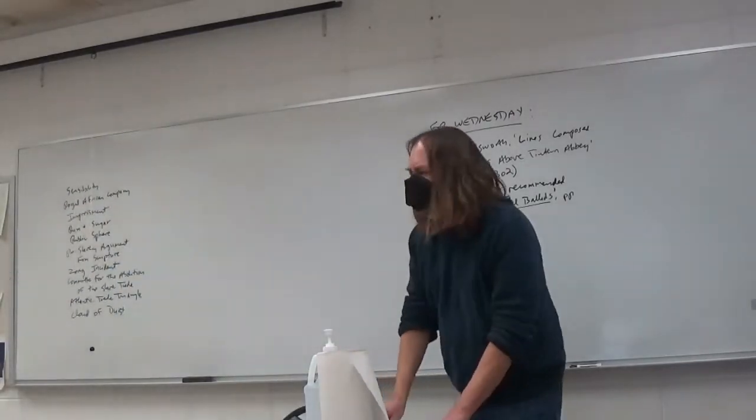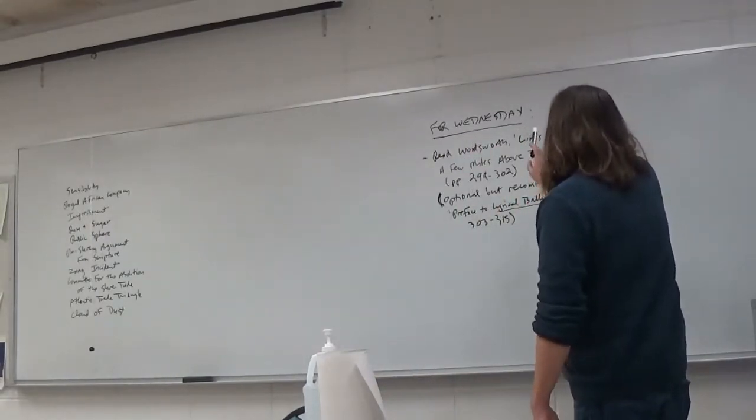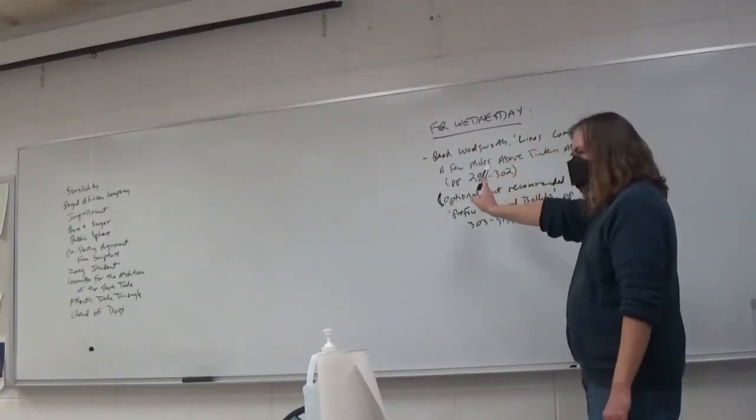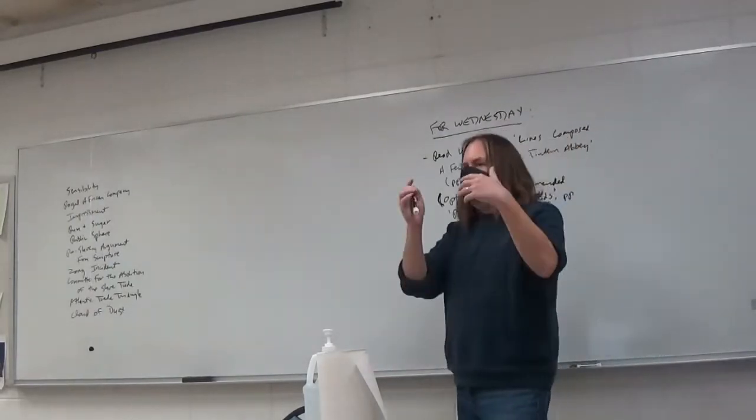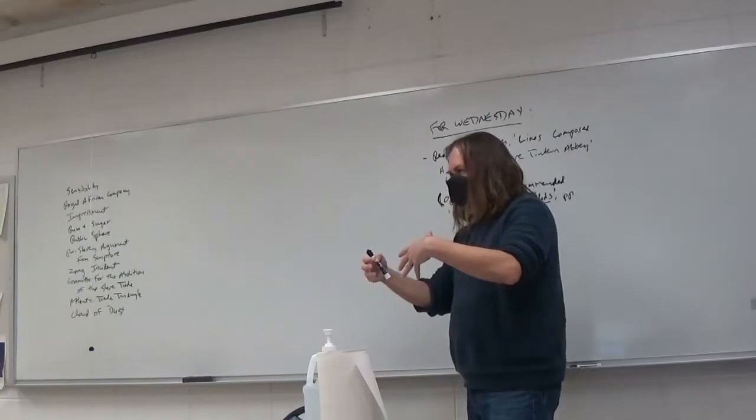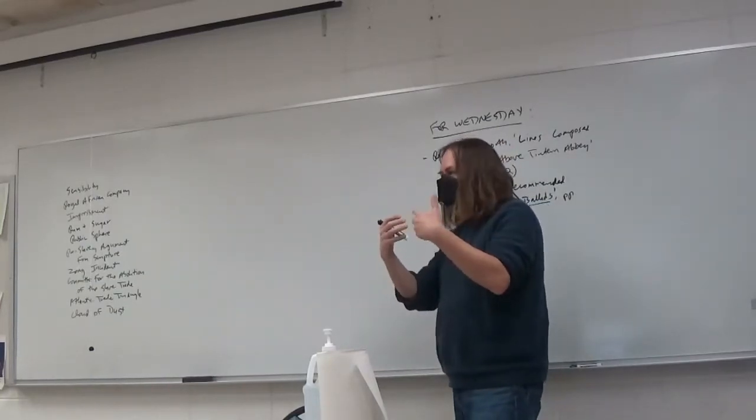Okay, so for next time, you're going to be reading William Wordsworth's poem, Lines Composed a Few Miles Above Tintern Abbey. We're going to be moving from backgrounds of Romanticism and origins of Romanticism into British Romantic poetry.